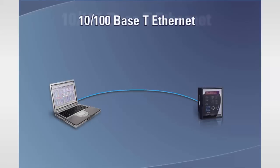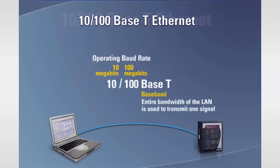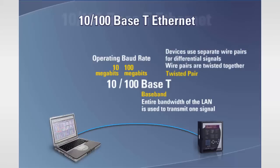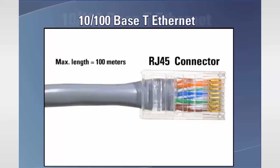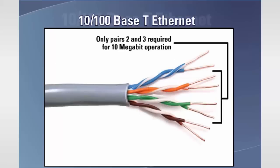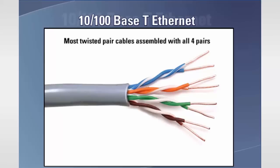The most common electrical standard today is 10/100BASE-T. The 10 refers to the operating baud rate of 10 megabits per second, while 100 refers to a baud rate of 100 megabits per second. Most new equipment can operate at either baud rate. The term base stands for baseband, which means that the entire bandwidth of the LAN is used to transmit one signal. The T stands for twisted pair, which means the transmitter and receiver use separate pairs of wires for a differential signal, with the wire pairs being twisted together. The cable consists of four pairs of wires terminated in RJ45 connectors. The maximum length of the cable is 100 meters. Only pairs two and three are required for 10 megabit operation, while all four are required for 100 megabit operation. Most twisted pair cables are assembled with all four pairs.